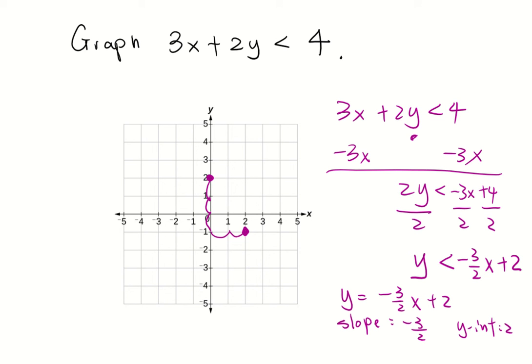So now we're going to connect the 2 points with a dashed line. That's right. Because we're having less than, not less than or equal to. So connect the 2 points with a dashed line. Right.